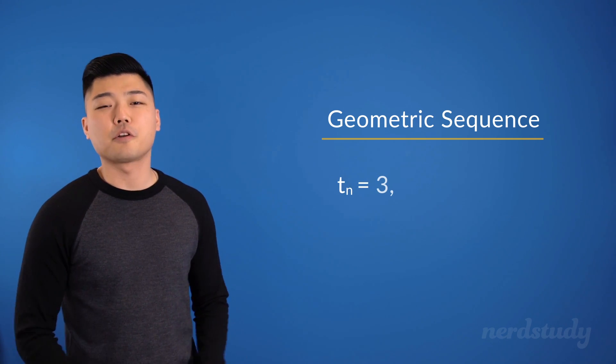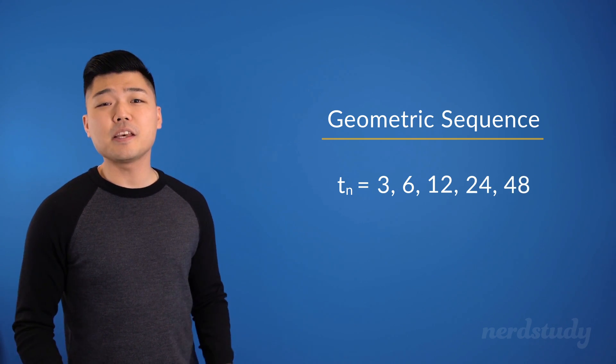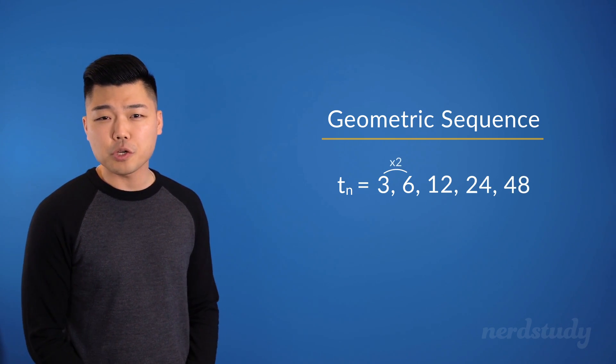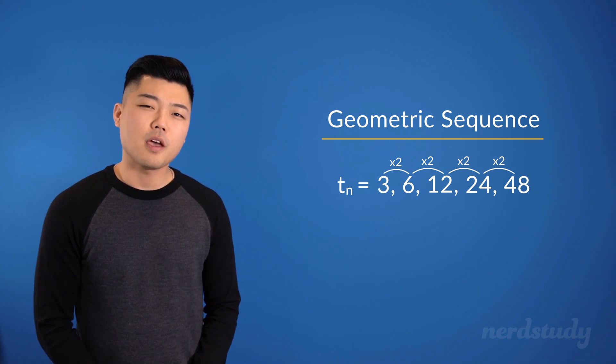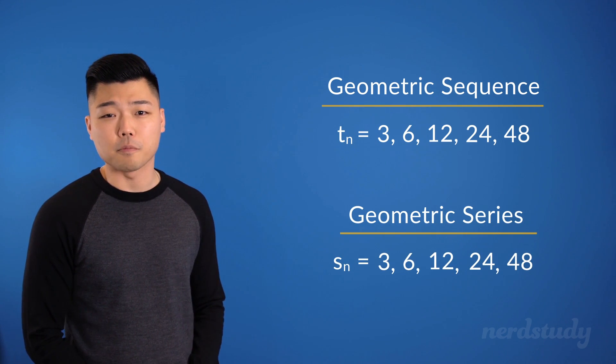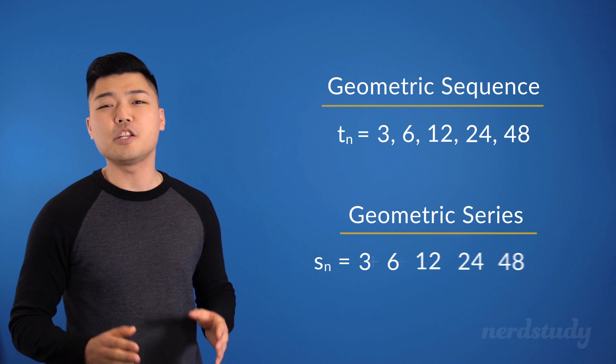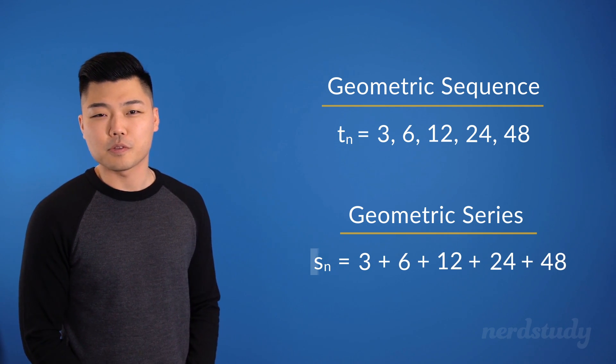So here is our geometric sequence and as we already know it is a list of numbers where the ratios of the consecutive terms are constant. However a geometric series is essentially the same thing except that it is the addition of all the terms in a geometric sequence, like so.